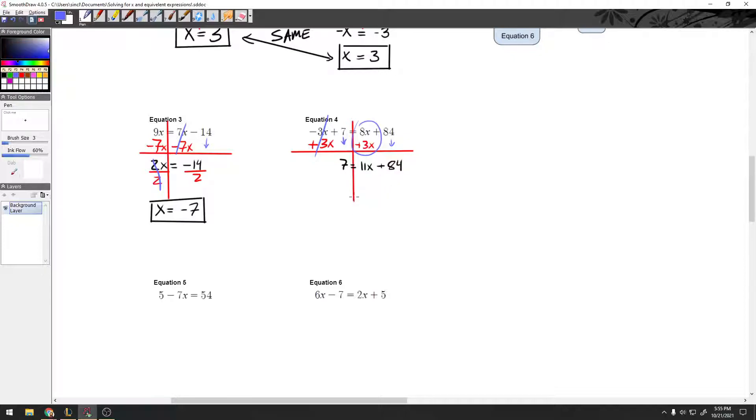The next move is to get rid of the things bothering x, which would be the 11 and the 84. The easiest one to get rid of is 84 with the opposite. Negative 84 on both sides. I'm going to go ahead and cross this out, bring down my 11, and run this through my calculator, and that gives me negative 77 equals 11x.